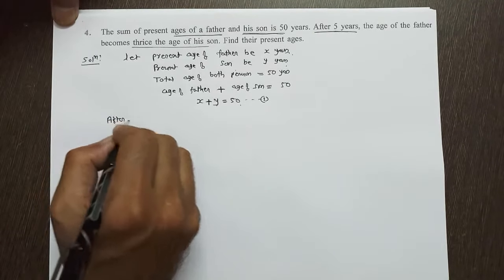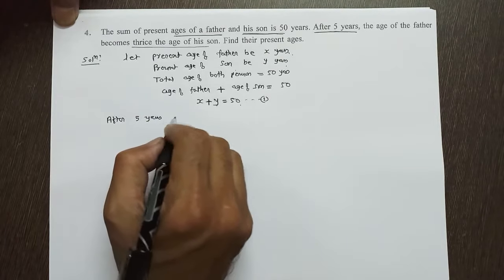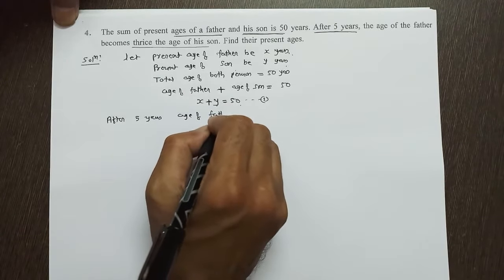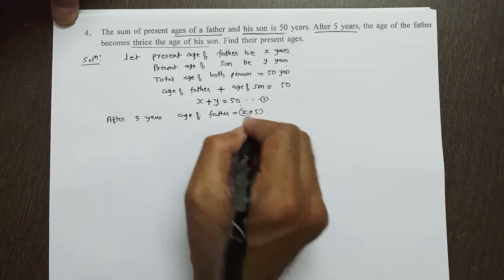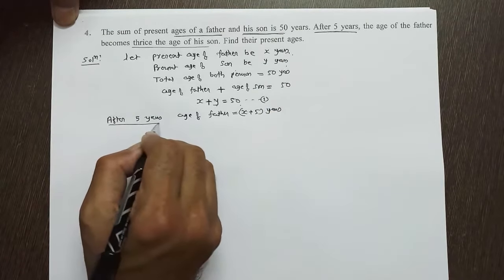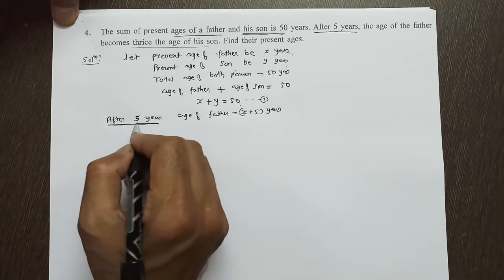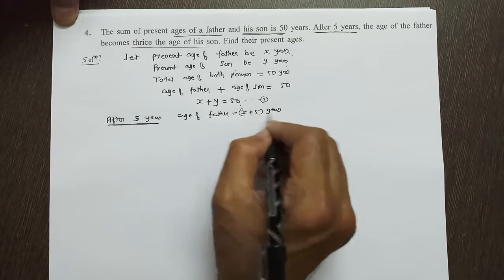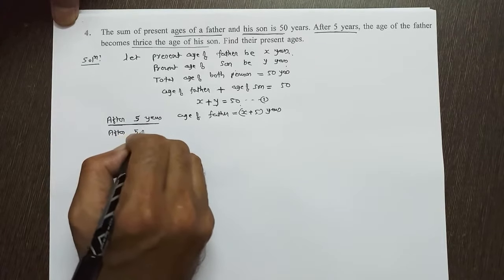After five years, means five years after, age of father equal to X plus five. After means five years later, after five years.